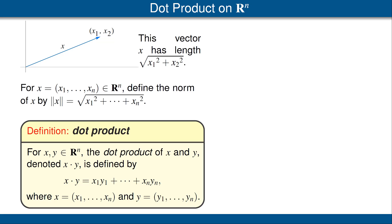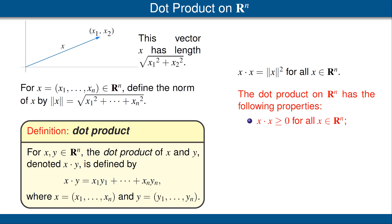However, there is no linearity in sight. Thus, we introduce the dot product. For vectors x and y in Rn, we define the dot product of x and y to be the sum of the coordinate-wise products, as shown here. We see immediately that x dot x equals the sum of the squares of the coordinates of x. Thus, x dot x is equal to the square of the norm of x.